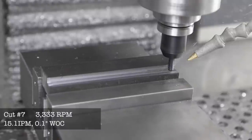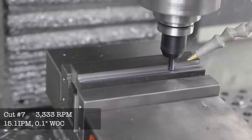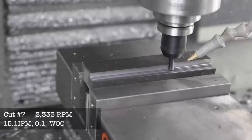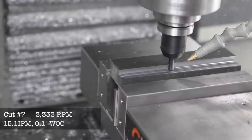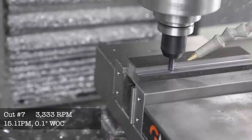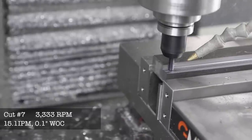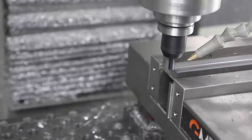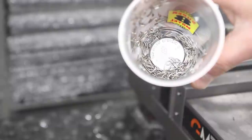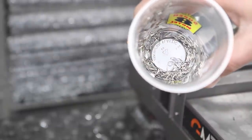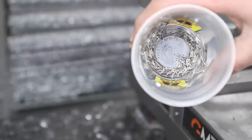This is cut number seven: 3,300 RPM, 15.1 inches a minute, 0.1 inch width of cut. That's an increase from what we've been doing on the first six cuts at 0.0625. Actually, forgive me, the first cut was 0.1 as well. All this information is in the Excel file. Coincidentally this is about the same amount of horsepower as cut six, with a similar material removal rate. Just barely still starting to see some straw color in that chip, and that's what I want. I'm not going to be happy until we're really dumping heat into these chips.